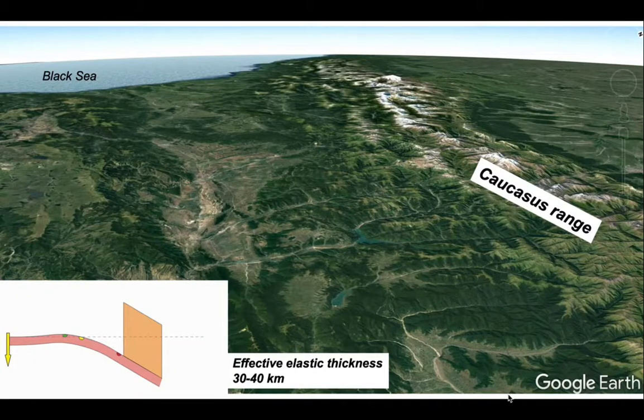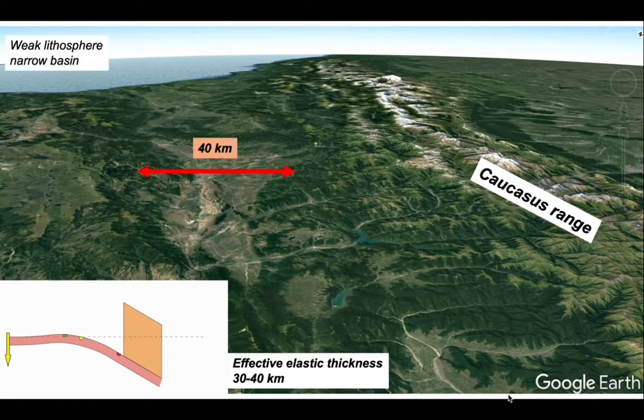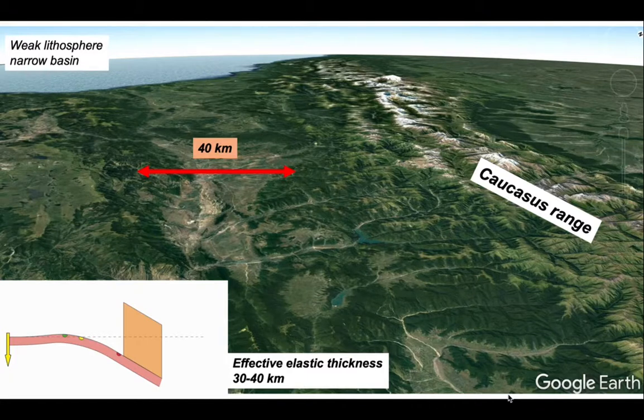Here we are looking in a Google Earth image towards the west along the mountain range and its associated foreland basin. The estimated effective elastic thickness for the lithosphere that's coming in from the south beneath the Caucasus Mountains is only 30 to 40 kilometers. Weak lithosphere. Consequently, the basin that is supported by this lithosphere is narrow. It's only about 40 kilometers wide or less between the orogenic belt and the unsubsided foreland. So a narrow basin when the effective elastic thickness is low.